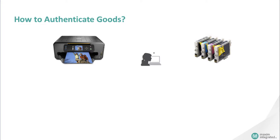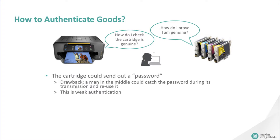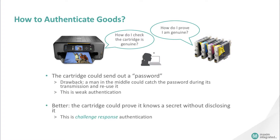How do we authenticate goods? There are many ways to authenticate products. For example, if we want to authenticate the printer cartridge, we can have the cartridge send out the known password to the printer before printing can move on. This is a weak authentication, since a person in the middle could catch the password during transmission and reuse it for fake ones. To avoid that problem, a better way is for the cartridge to prove it knows a secret without disclosing it. This method is called Challenge Response Authentication.